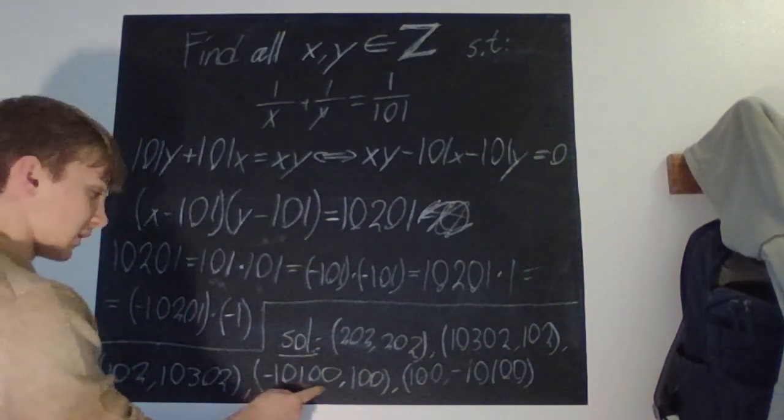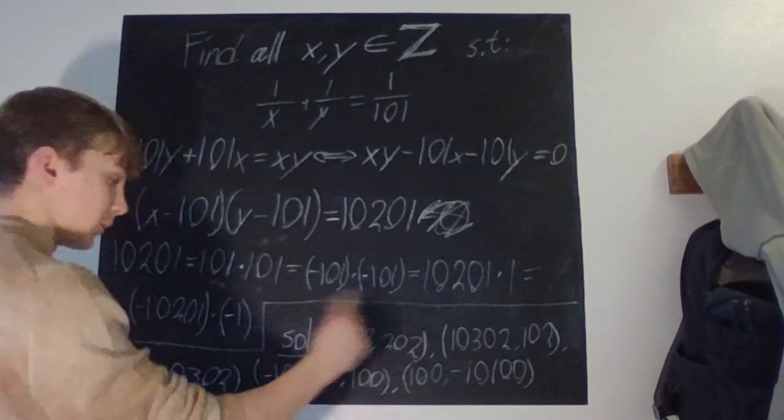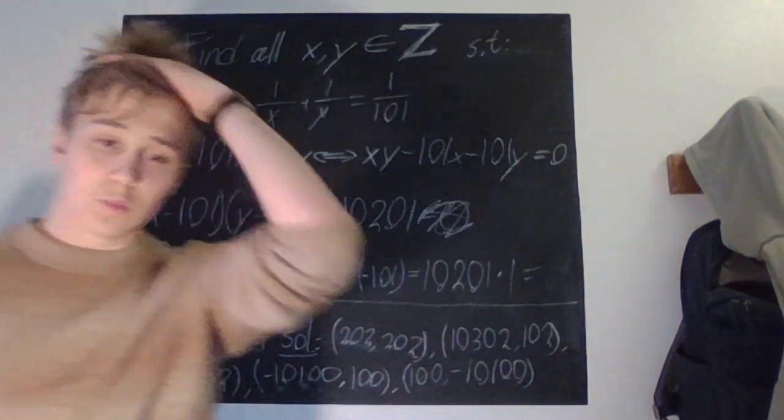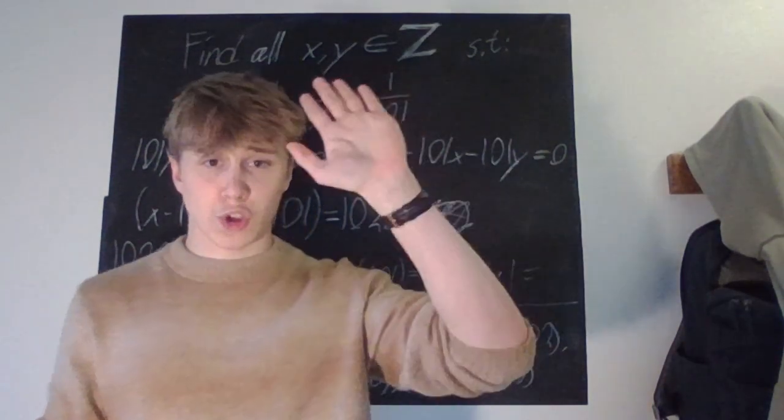So, and yes, and we do the reverse order. And then for this one, it's also +101 on both sides. So, we have -10100, 100. And then we do the reverse. So, 100 and -10100. And we are done. See ya!